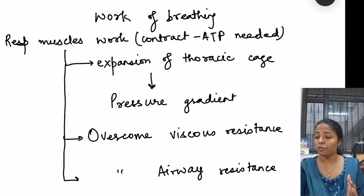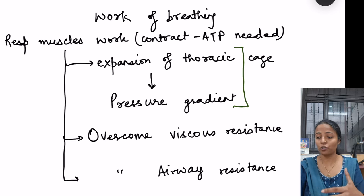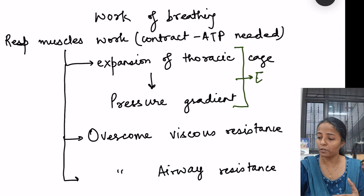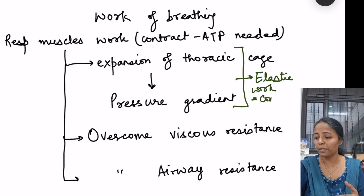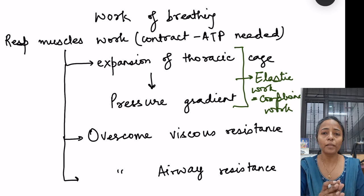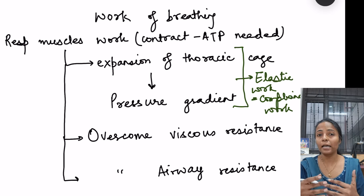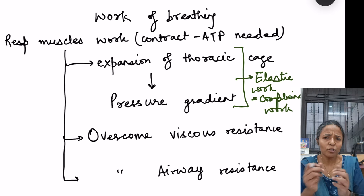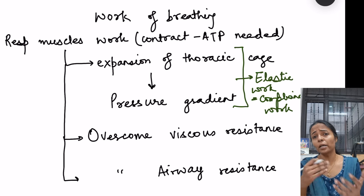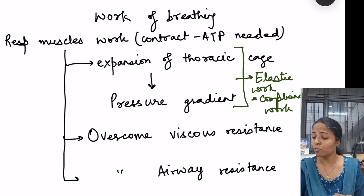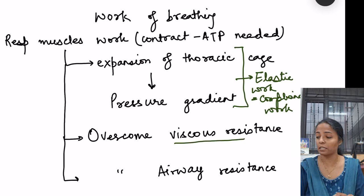For expansion of the thoracic cage we need the movement of these elastic structures, so there is some elastic work done. This is known as elastic work, or it is also known as compliance work, for the movement of the elastic structures. Apart from that, there are inelastic structures for which work is also required, and that is known as overcoming viscous resistance — this is known as tissue resistance work.